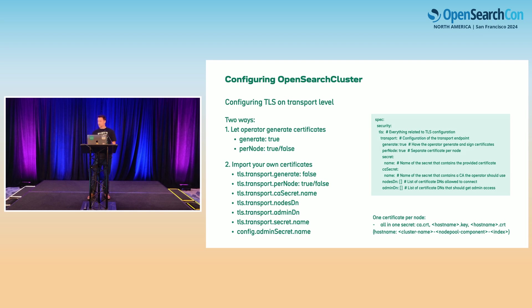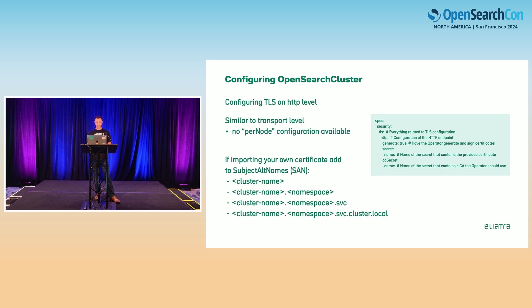For TLS configuration, the reason we went through the self-signed process is that OpenSearch does exactly the same thing for you — all the heavy lifting — if you set generate equals true. It will create the same certificate authority and the same certificates, except everything will be done for you on the fly. If you decide to import your own certificates, there is additional configuration required. That's for the transport layer. For the HTTP layer, it's very similar except there is no per-node certificate — it's one across the whole cluster. If you import your own, you need to mention those names in the subject alternative names as well.